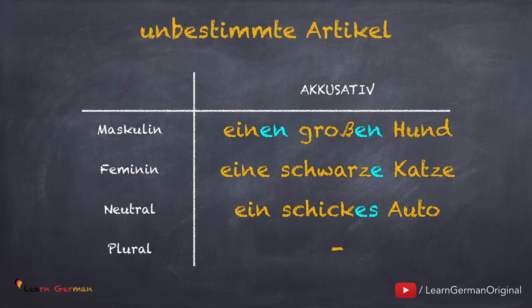Deshalb für Maskulin sagt man: einen großen Hund. Adjektivendung für Feminin und Neutrum bleibt gleich wie im Nominativ: eine schwarze Katze, ein schickes Auto. Die Pluralform gibt es nicht beim unbestimmten Artikel.